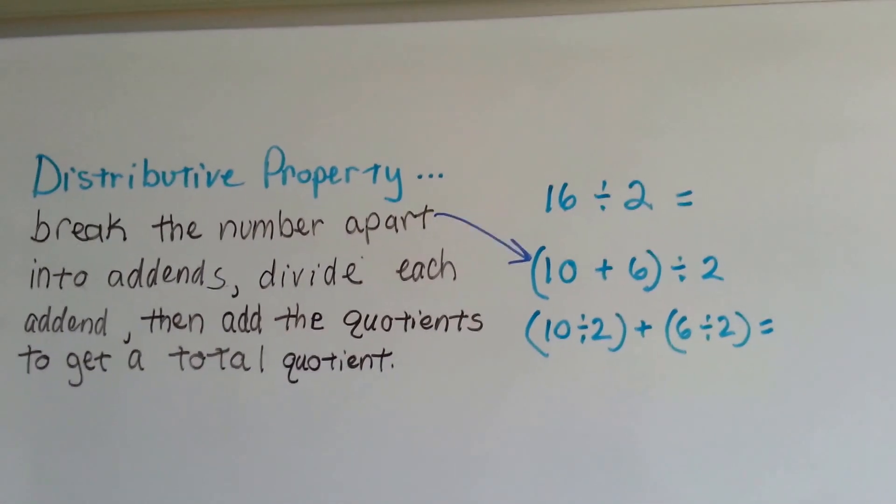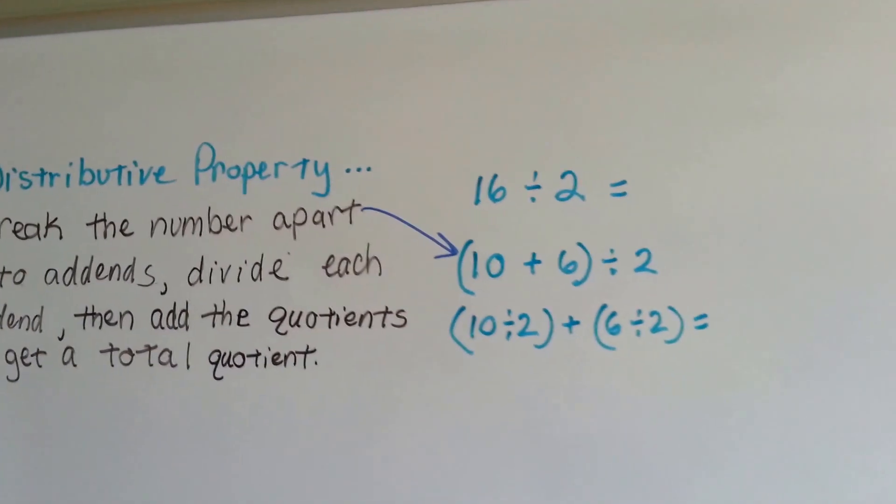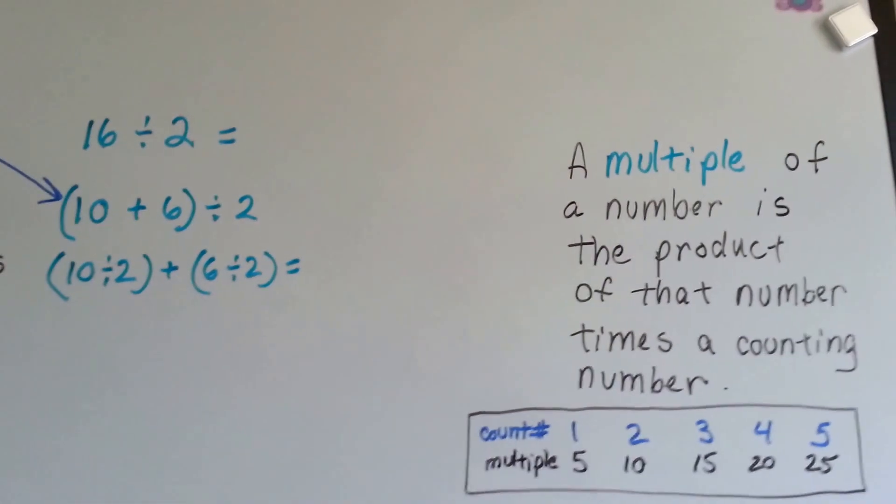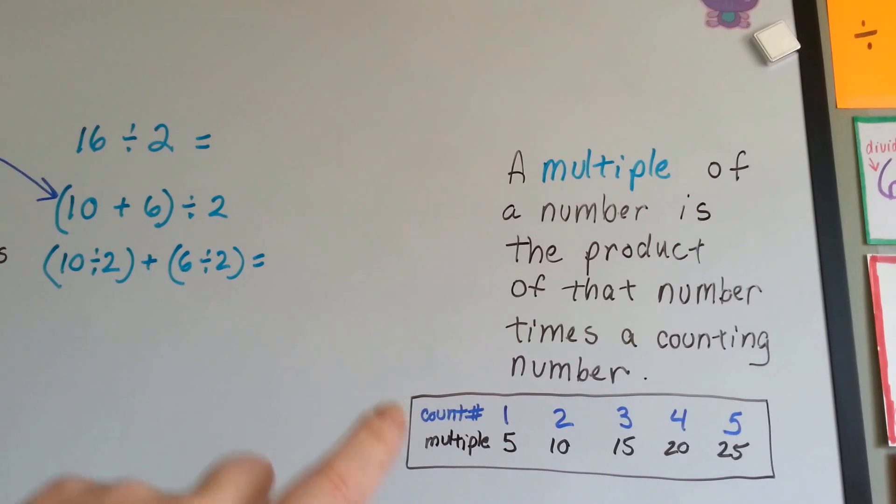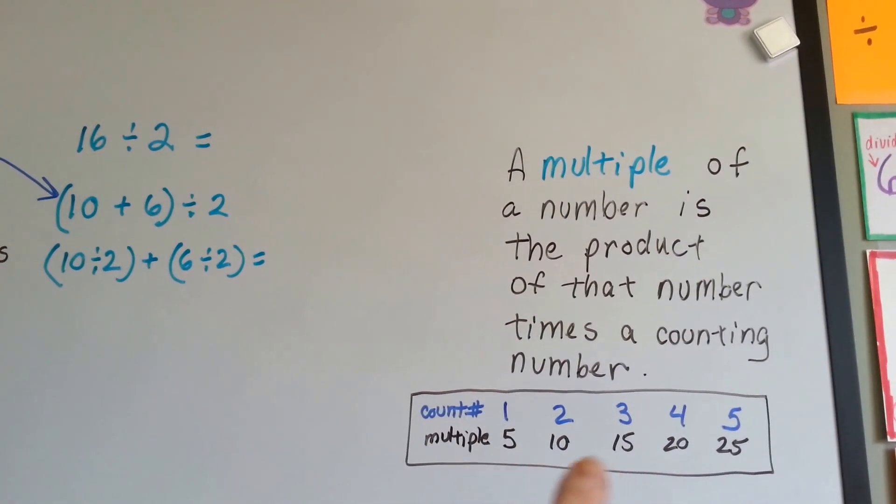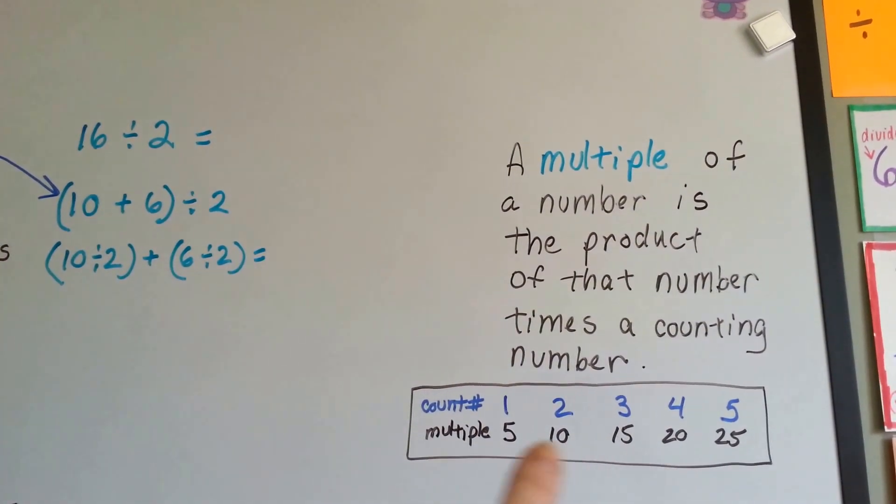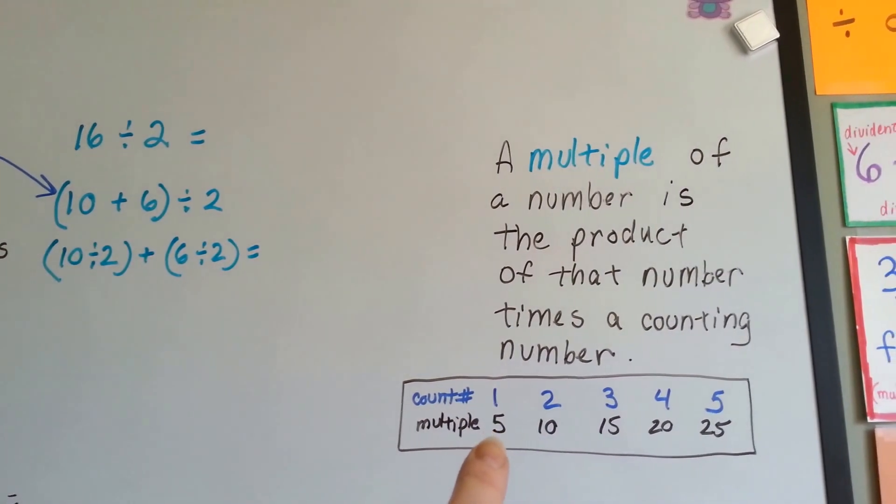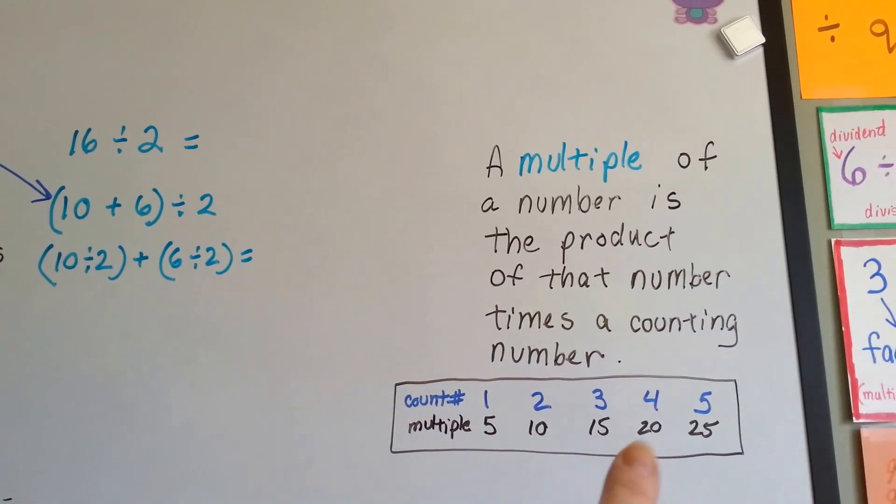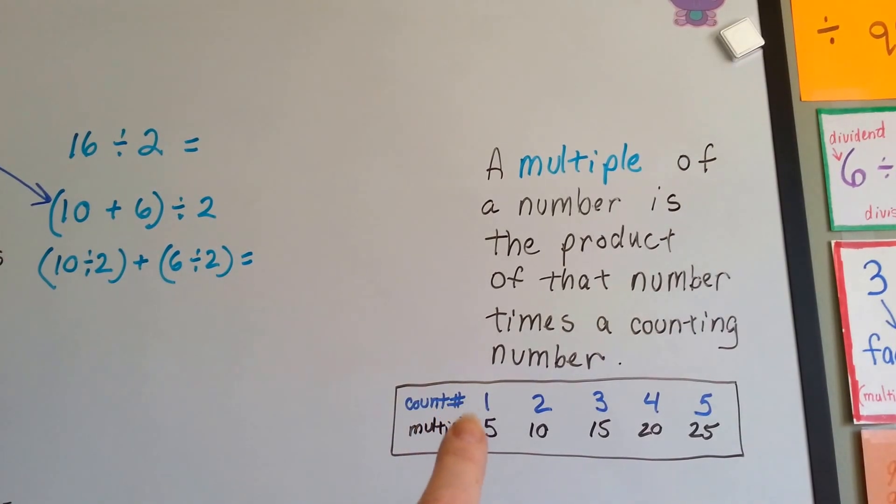Now, the easiest way to do this is to break the addends up as multiples. If you don't remember what a multiple is, a multiple of a number is the product of that number times a counting number. So multiples of 5 are 5, 10, 15, 20, 25, because the counting numbers: 5 times 1 is 5.